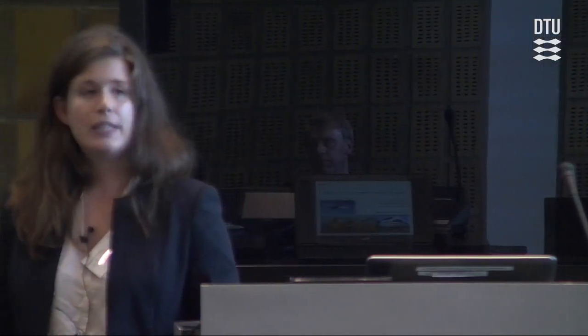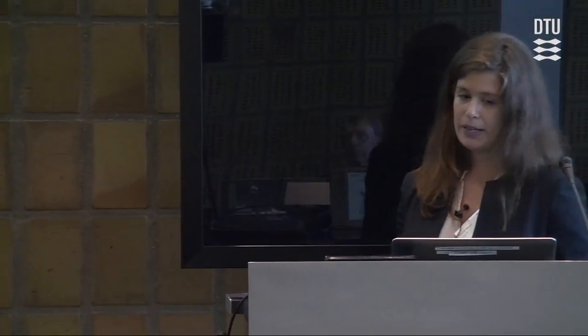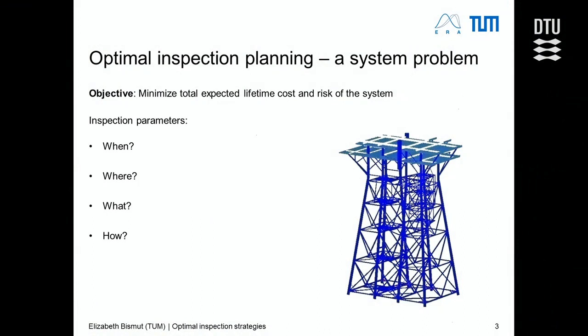I'm particularly interested in optimal inspection strategies in structural systems — something the industry wishes to tackle. For any deteriorating system, deterioration has uncertainty that needs to be quantified, and this uncertainty can be reduced through inspection. The key question for any operator is: what is the optimal inspection and maintenance plan for minimum cost over the life cycle of the structure? The objective is to minimize total expected lifetime costs and risk. There are four questions generally asked in inspection planning: when, where, what, and how.